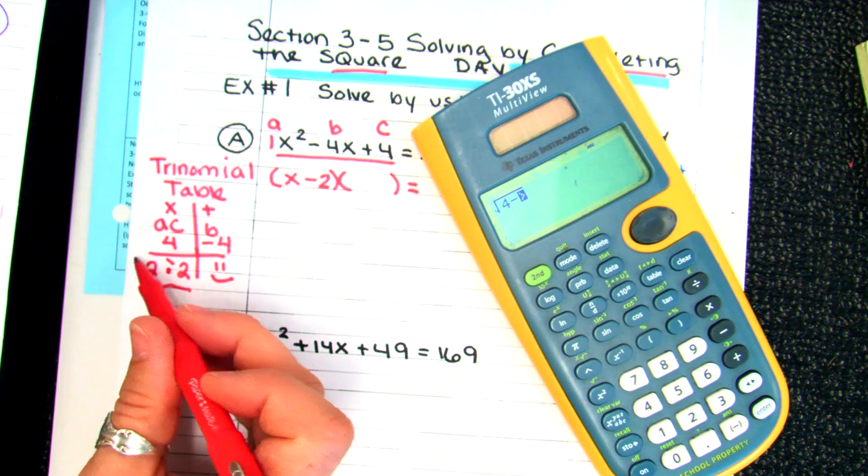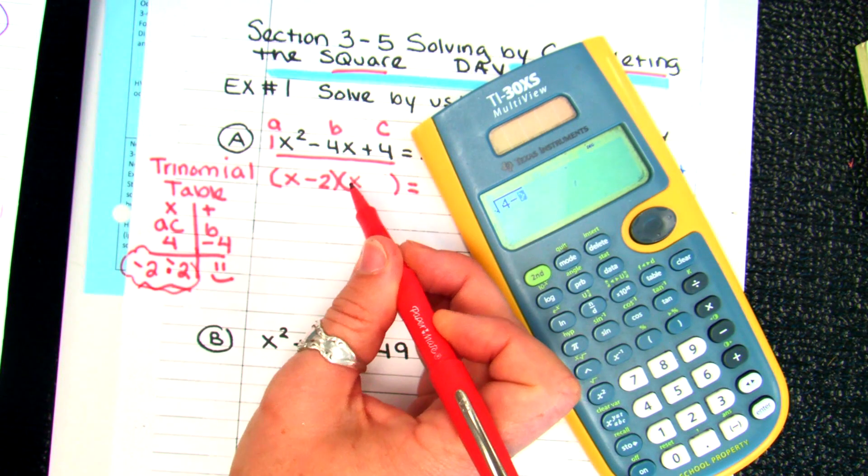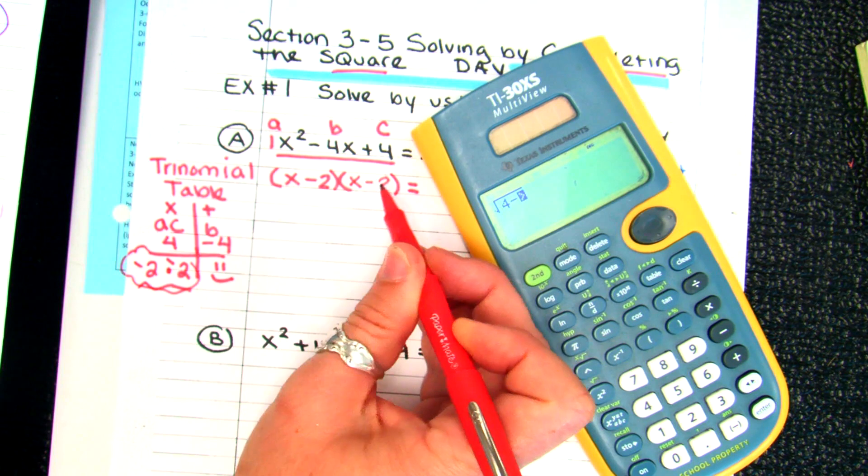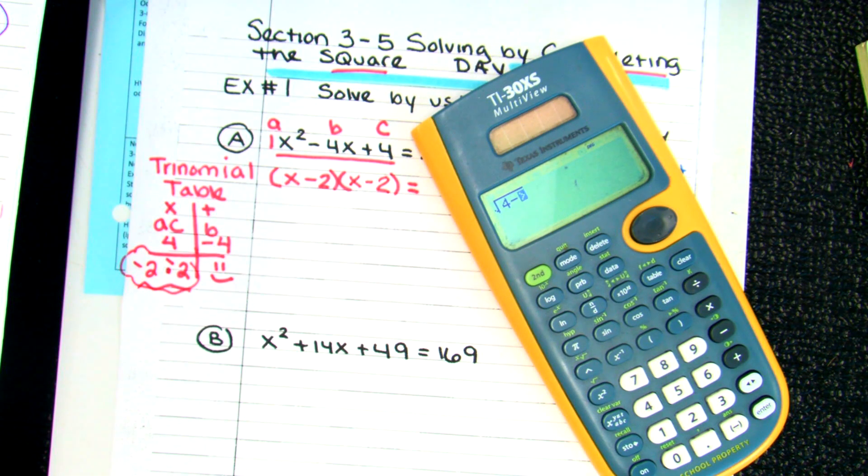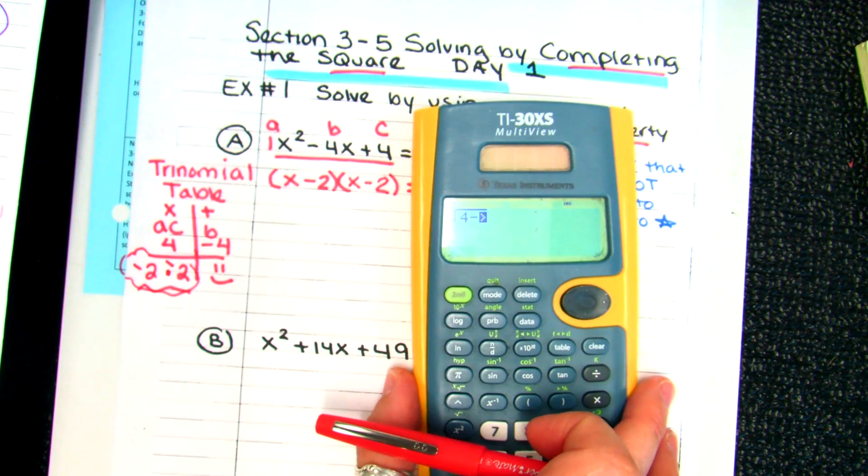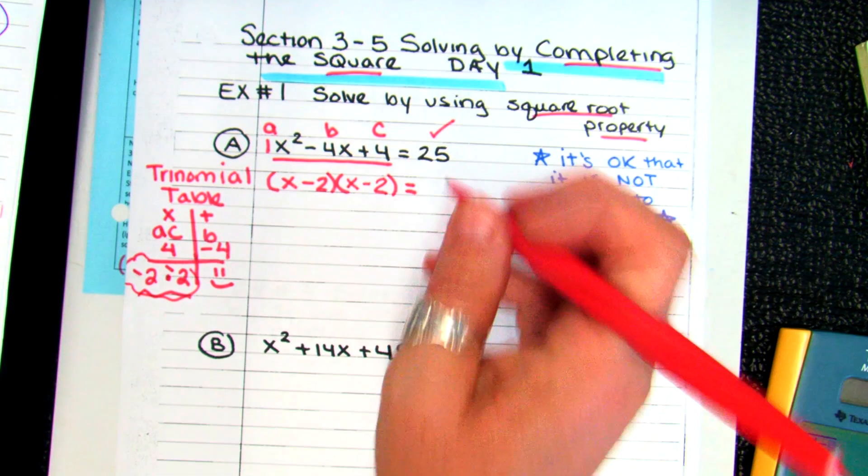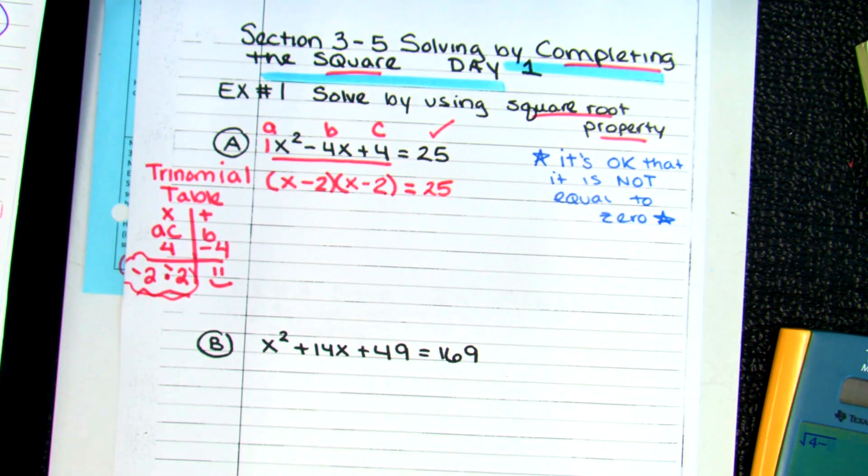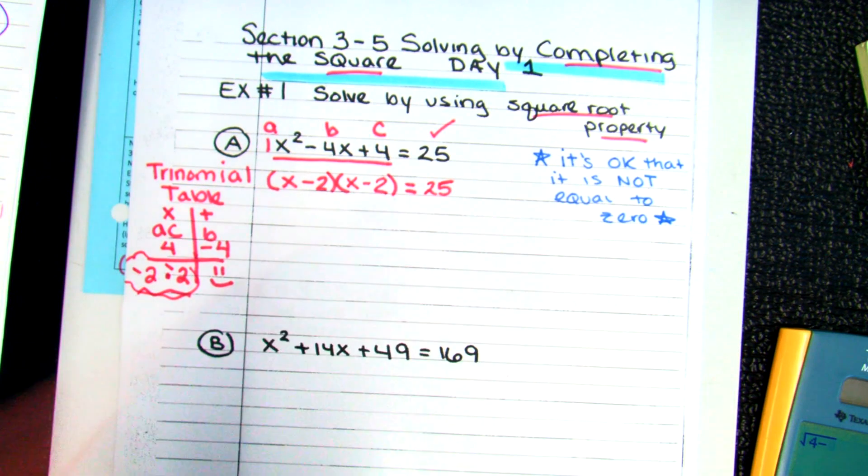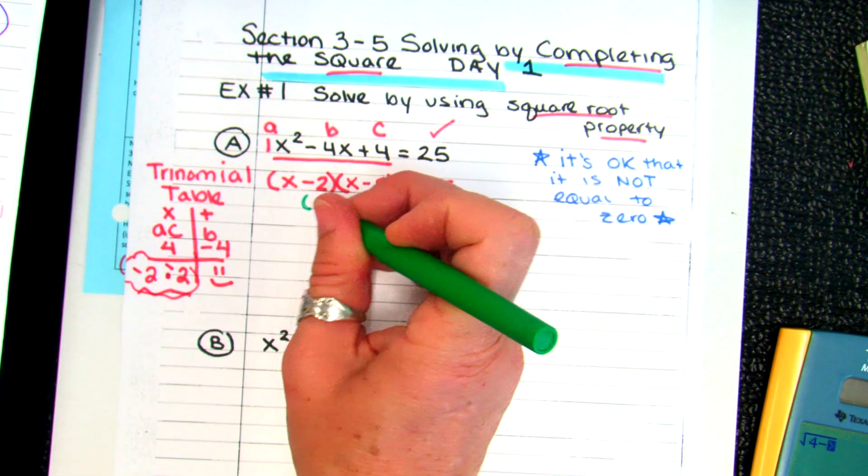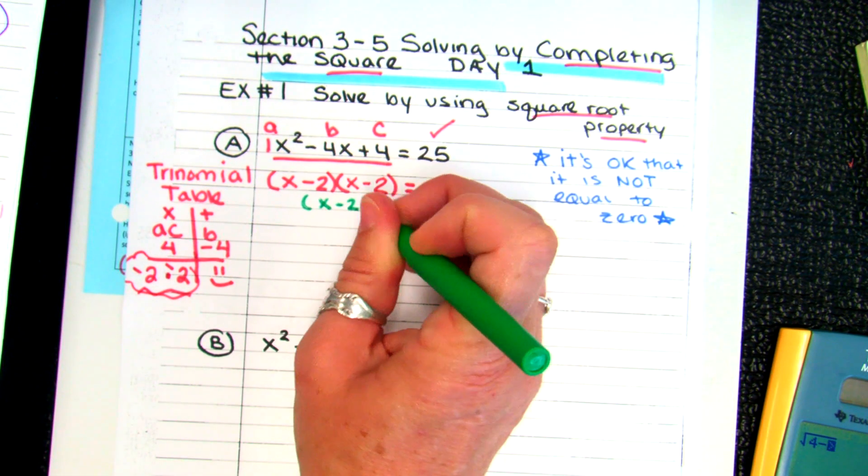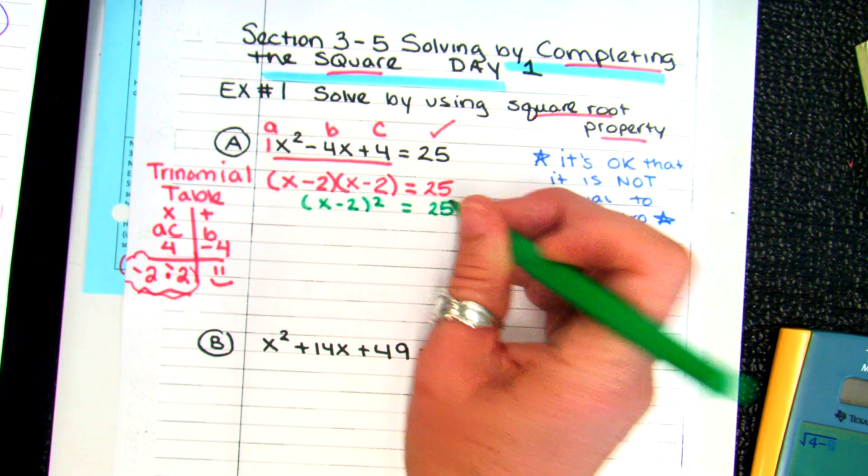When I have the magic numbers right here, I put an X in both of the parentheses and both of them get a negative two. So I'm factoring on the left. They're always going to be the same in this method. Does anybody know another way to write it if I say X minus two times X minus two? What's another way to write this? X minus two squared. We're going to use a square root method in just a little bit.